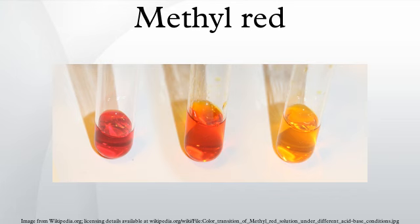Enterics that subsequently metabolize pyruvic acid to other acids lower the pH of the medium to 4.2. At this pH, methyl red turns red — a positive test. Enterics that subsequently metabolize pyruvic acid to neutral end products lower the pH of the medium to only 6.0. At this pH, methyl red is yellow — a negative test.